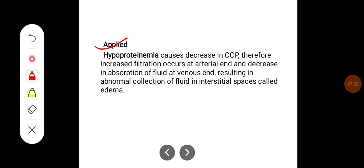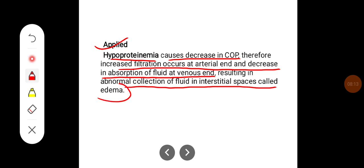Some applied aspects related to lymph: hypoproteinemia causes decrease in colloidal osmotic pressure. Therefore, increased filtration occurs at the arterial end and decrease in absorption of fluid at the venous end, resulting in abnormal collection of fluid in interstitial spaces which is called edema.